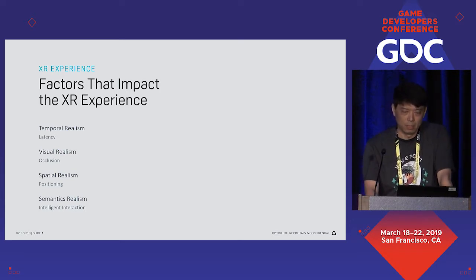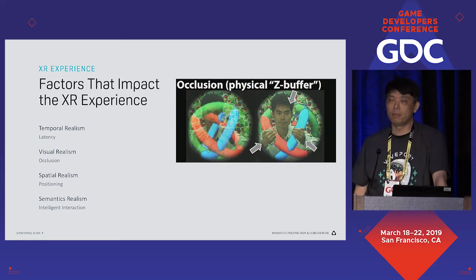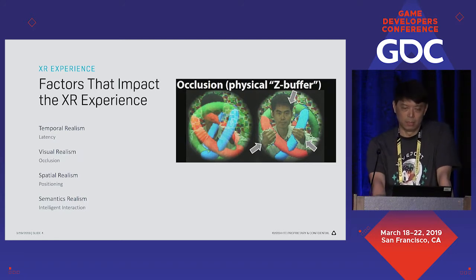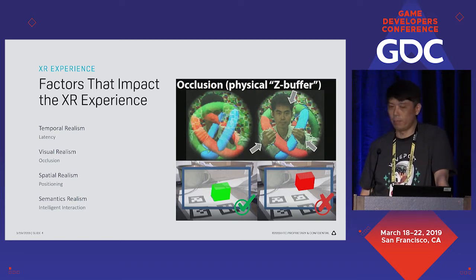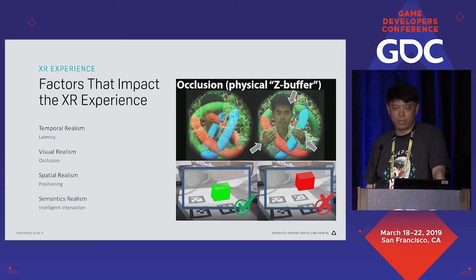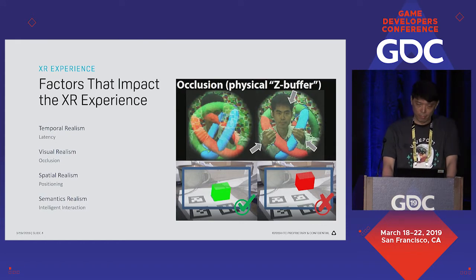First, temporal realism. Second, visual realism — such as occlusion, shown on the top-right figure. It is very important for us to distinguish the relative distance between objects. Third, spatial realism. For example, shown on the bottom-right figure, we can place a virtual object at the right physical position as we expect. Fourth, semantic realism — meaning the interaction behavior should make sense to human knowledge. For example, we always expect a human to walk on the surface of the floor rather than in the air. We always take this factor in mind when designing our SDK.